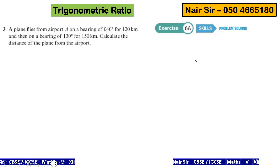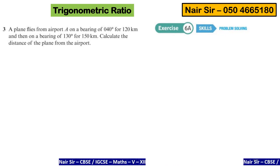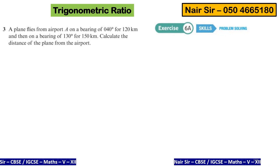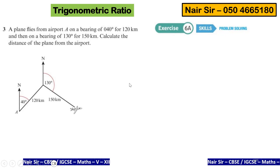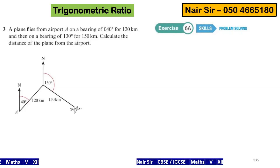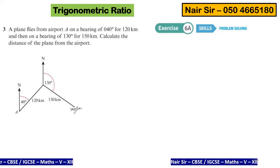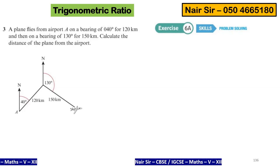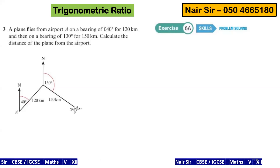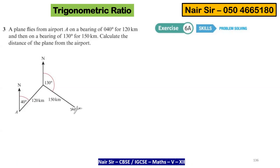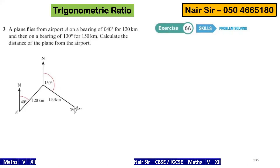The question we are solving is question 3: a plane flies from airport A on a bearing of 40 degrees for 420 kilometers, and then on a bearing of 130 degrees for 450 kilometers. Calculate the distance of the plane from the airport.